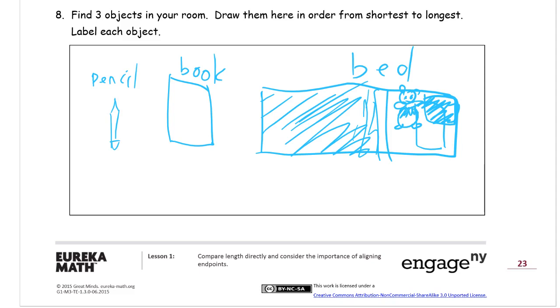That's a pencil. Then a little bit longer is a book. And then longest would be the bed. And label each object with its name.